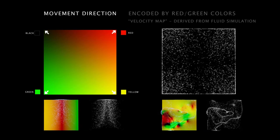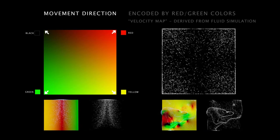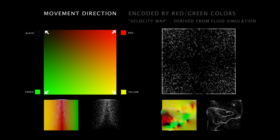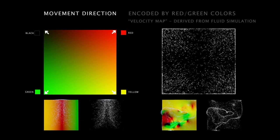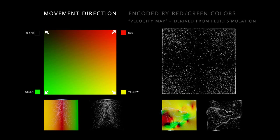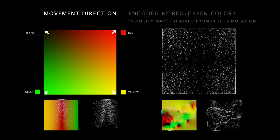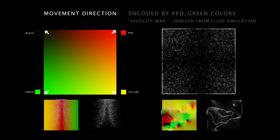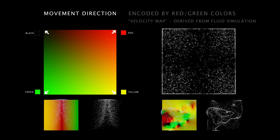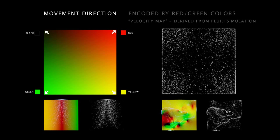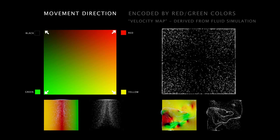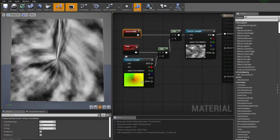Since Ninja is a fluid simulator, it is particularly useful to create maps that define how to offset the pixels of another texture — and that is why we are using Ninja for creating flow maps.